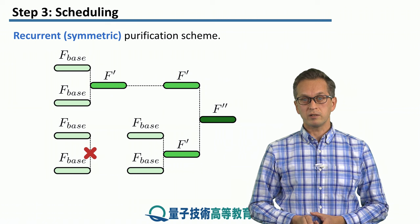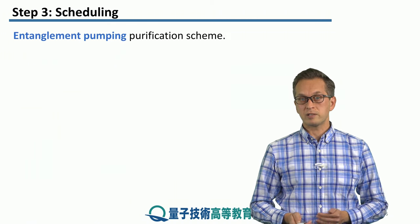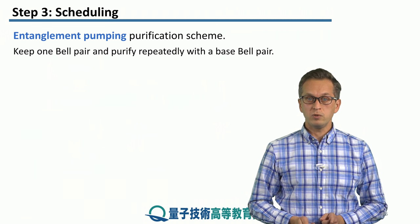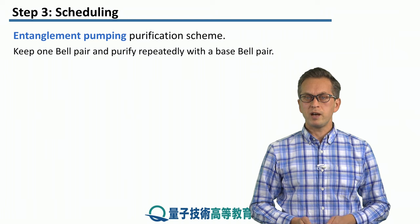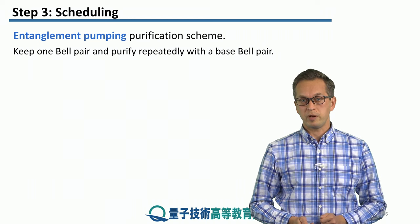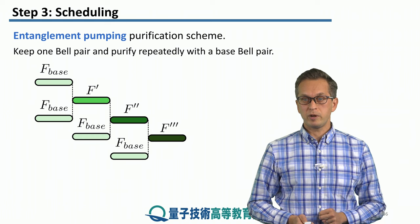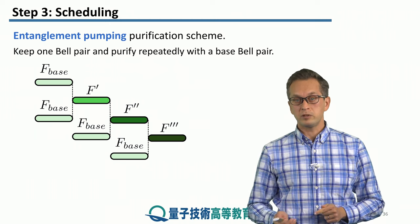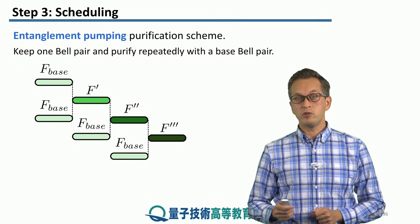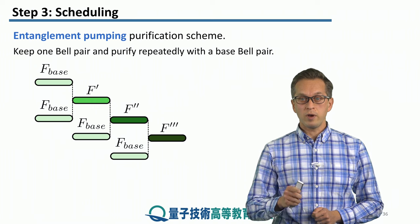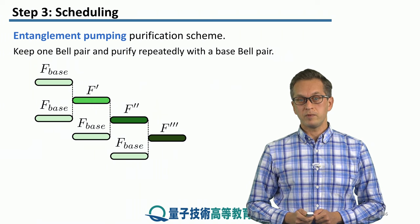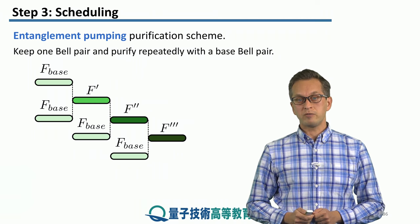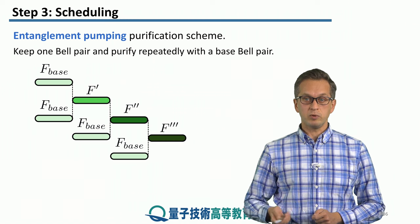So this covers the recurrent symmetric purification scheme. Now let's look at a slightly different scheme called entanglement pumping. Here, what you do is you keep one Bell pair and purify it repeatedly with the base Bell pair. You start with two Bell pairs of base fidelity and purify to get f_prime. Then you distribute another base Bell pair and run the purification scheme with your f_prime pair to get f_double_prime. Again, you bring in another base Bell pair and run the purification to boost the fidelity again.